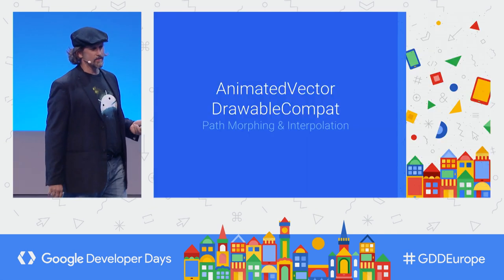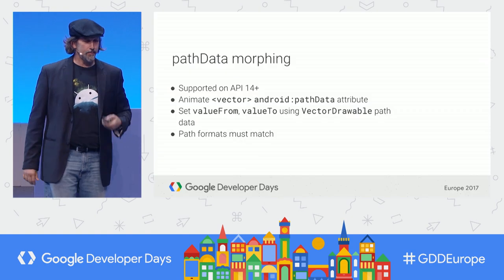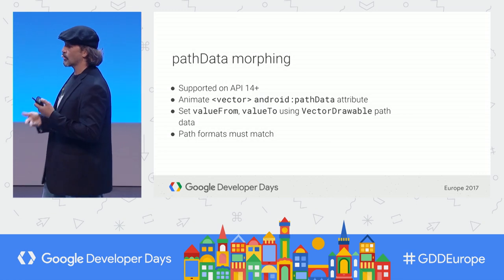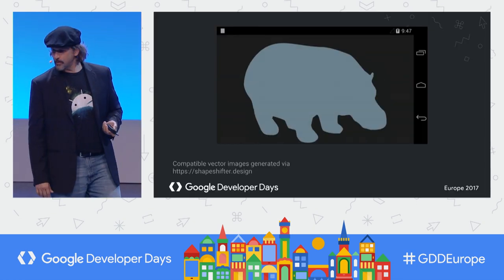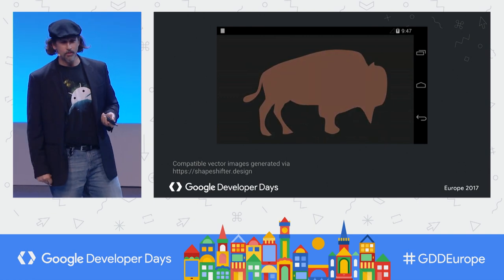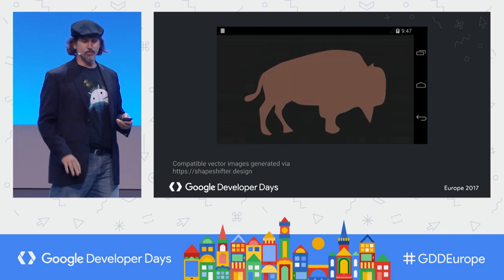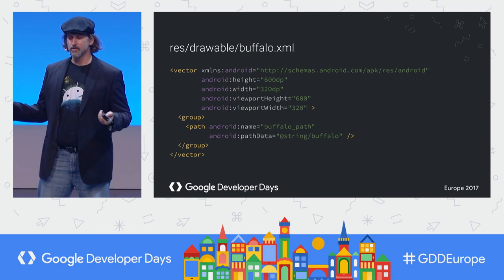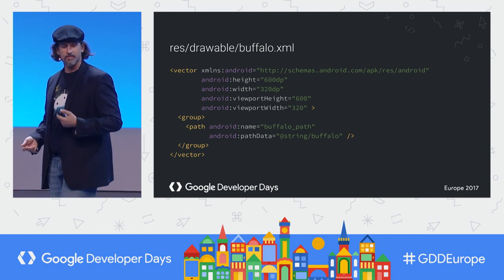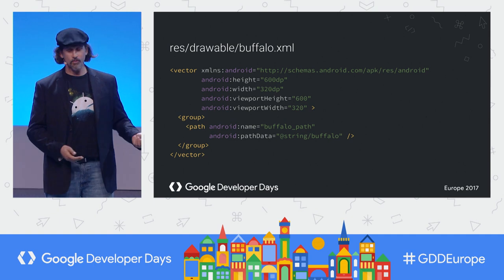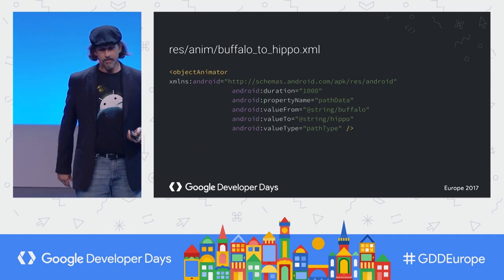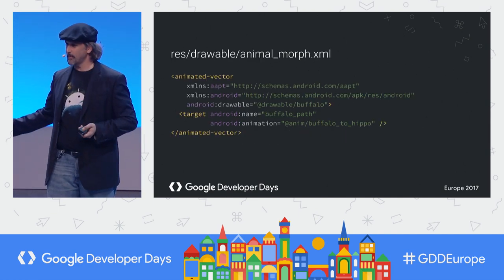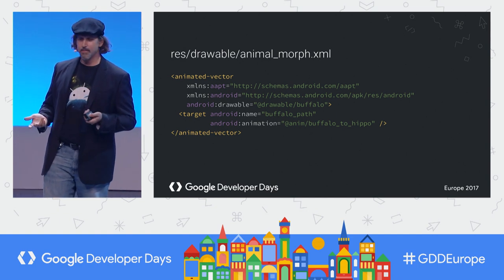We also backported stuff from animated drawable compat for path data morphing. This is an example of using ShapeShifter, Alex Lockwood's tool, to generate compatible images with matching path formats. At the XML level: you start with a vector defining your starting image — a buffalo. You extract the path data. For the buffalo, hippo, and elephant, you just do resources. Then you use an object animator specifying the path values to morph a buffalo to a hippo. You tie it all together in an animated vector XML.